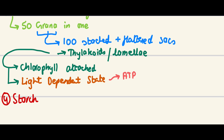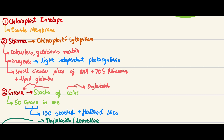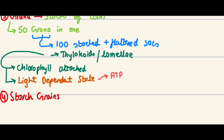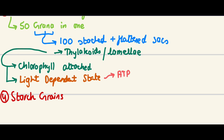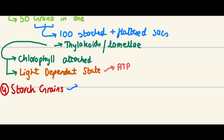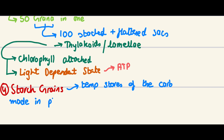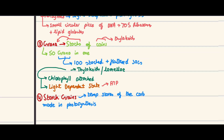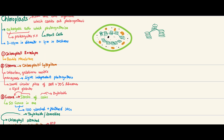Lastly, there are starch grains. When looking under a microscope, they appear quite prominent. They are part of the stroma but worth noting separately as an important microscopic observation. Starch grains are essentially temporary stores of the carbohydrate made during photosynthesis — and you should remember that photosynthesis creates carbohydrates.